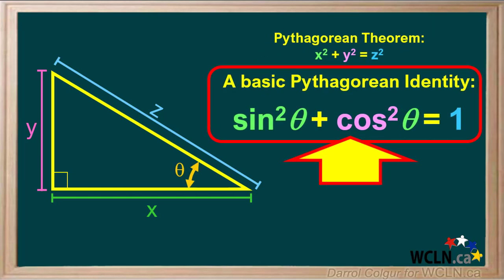The Pythagorean Theorem will help us come up with a basic Pythagorean identity. For an angle theta, sin squared theta plus cos squared theta equals 1. Let's see how this is done.